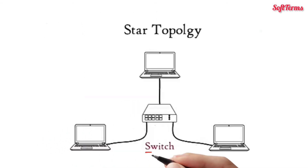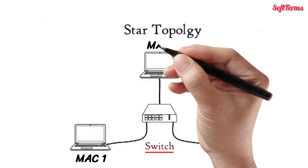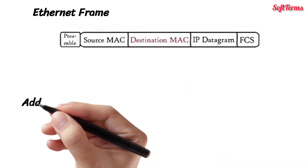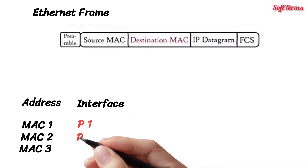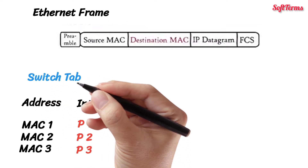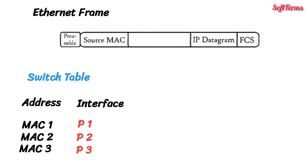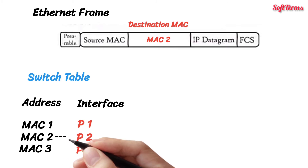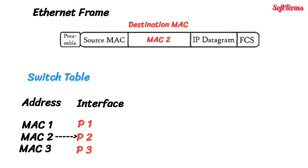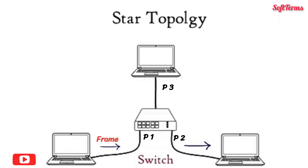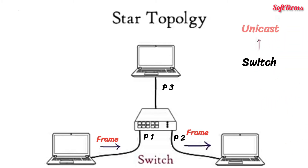To overcome these limitations, a switch is used as the central device. A switch is a more intelligent device than a hub. Every computer has a unique MAC address, and a switch stores the MAC addresses of devices connected to its ports — this is called a switch table. Since the data frame has a destination MAC address, the switch knows which port the device is connected to and forwards the received data frame to that port only, unicasting instead of broadcasting.